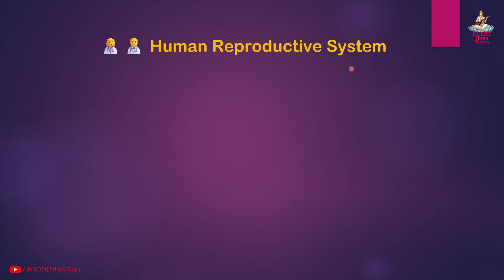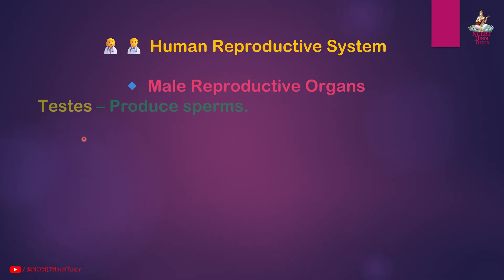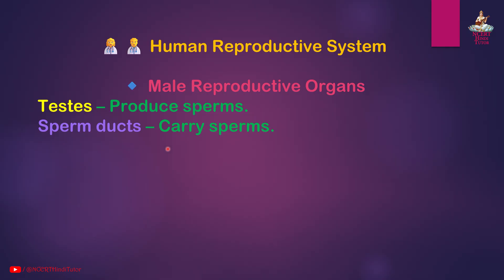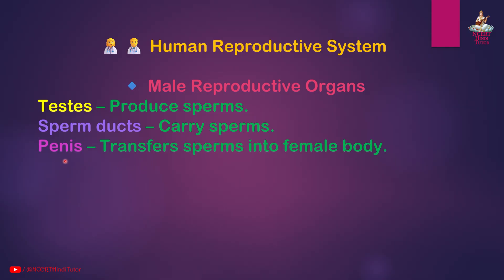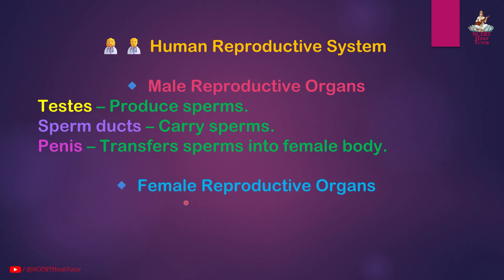Human Reproductive System — Male reproductive organs: Testes produce sperms; sperm ducts carry sperms; the penis transfers sperms into the female body.